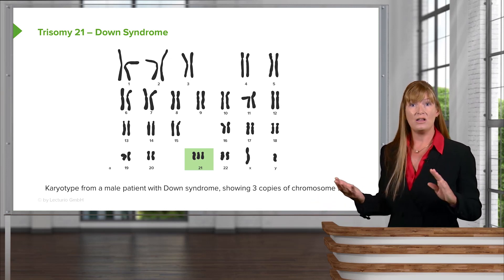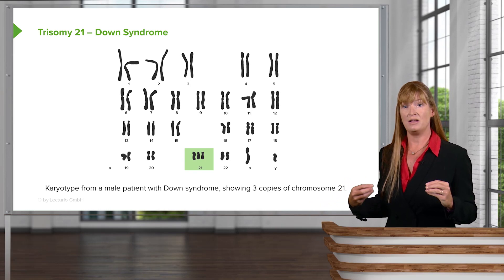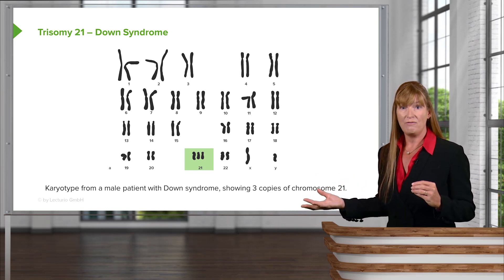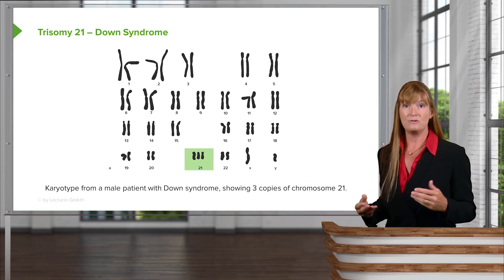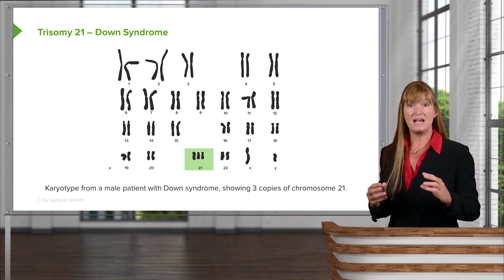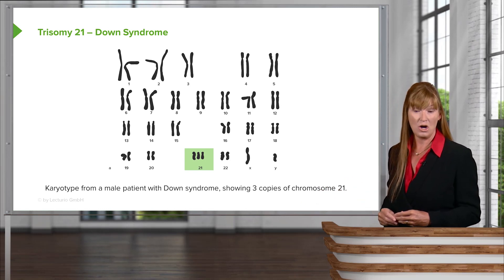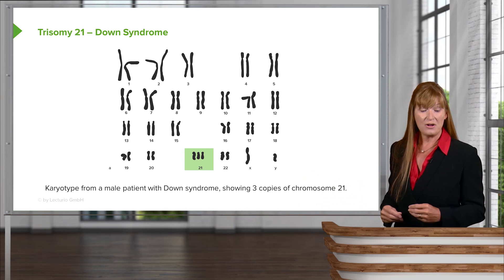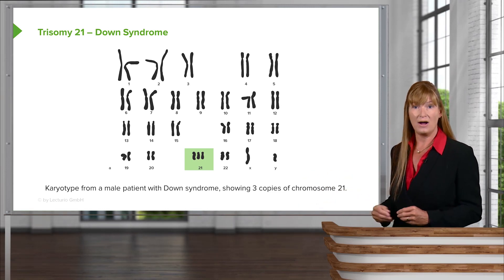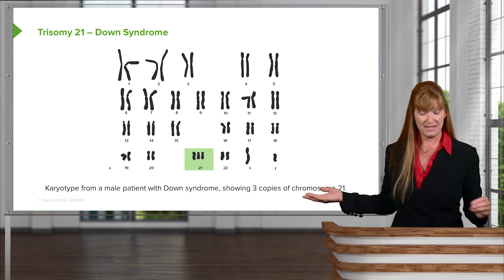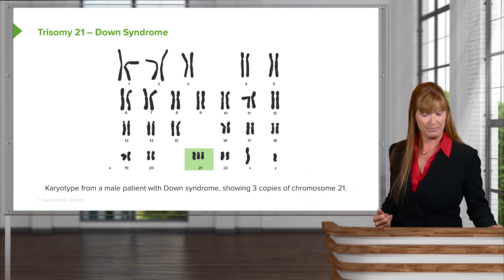We're going to spend a lot of time looking at Down syndrome and look at some visualization techniques, or techniques we use in genetics to test for Down syndrome and how those might look. Here we are with Down syndrome, trisomy 21. You can see in this karyotype clearly there are three chromosome 21s.